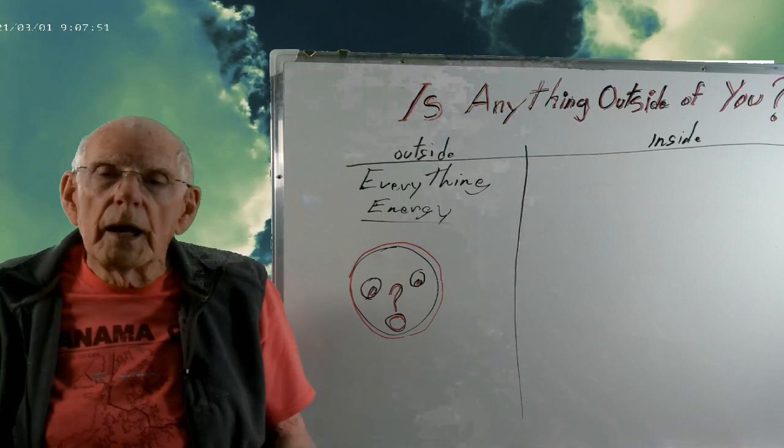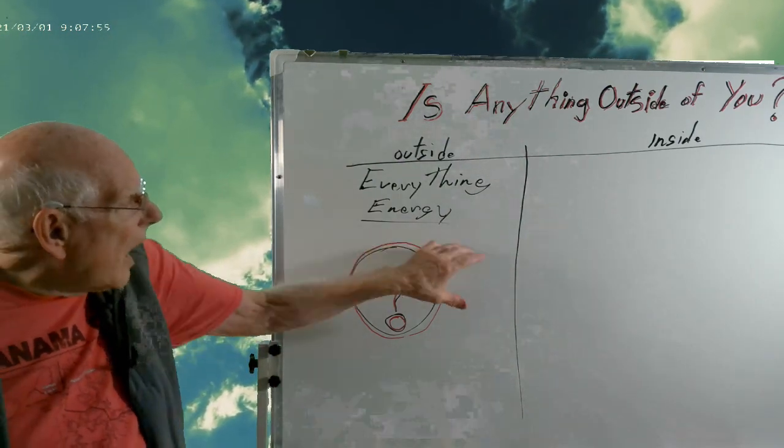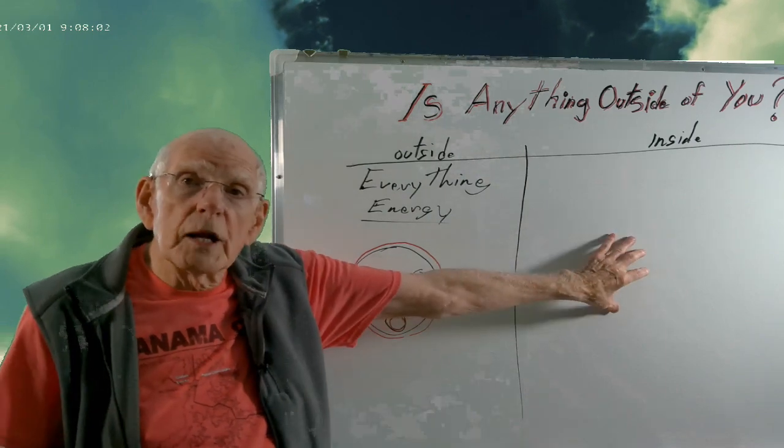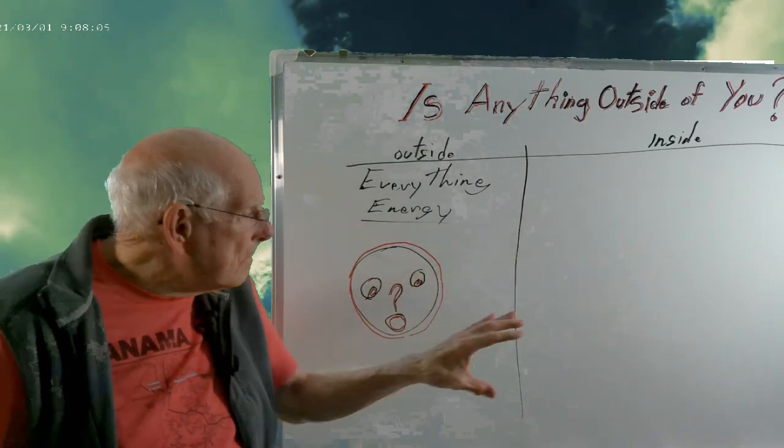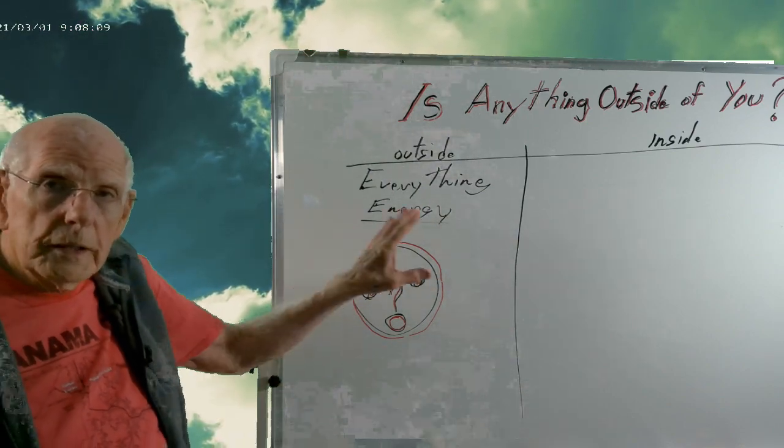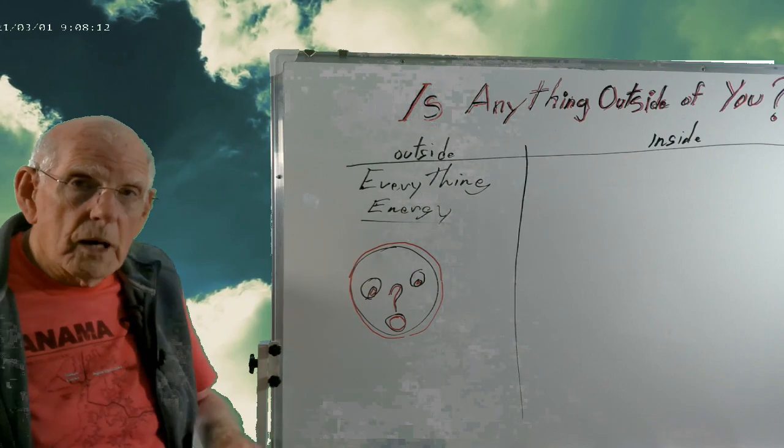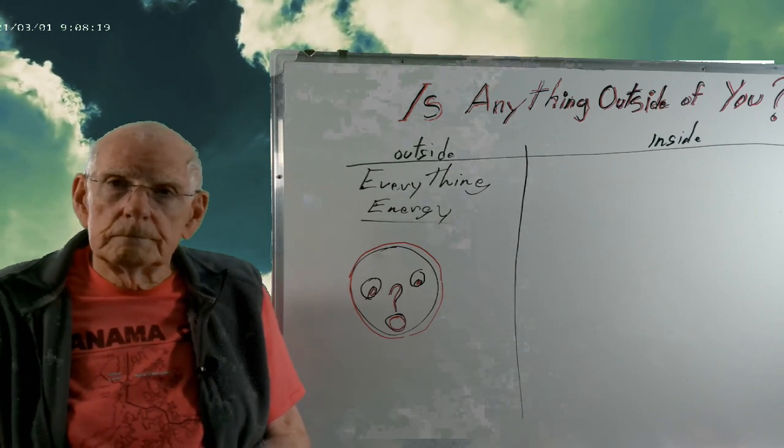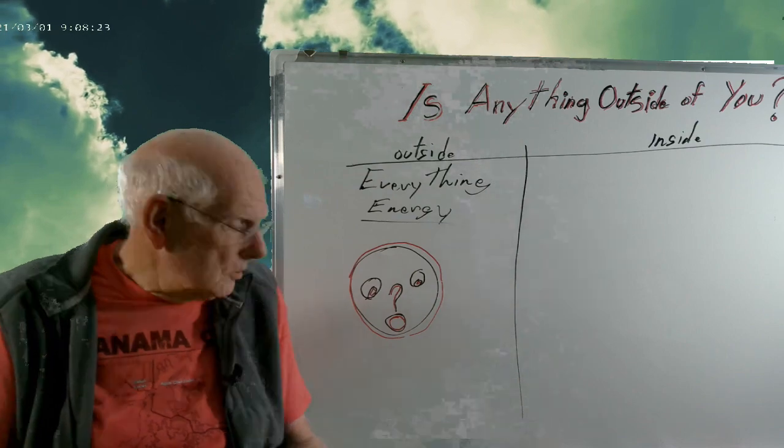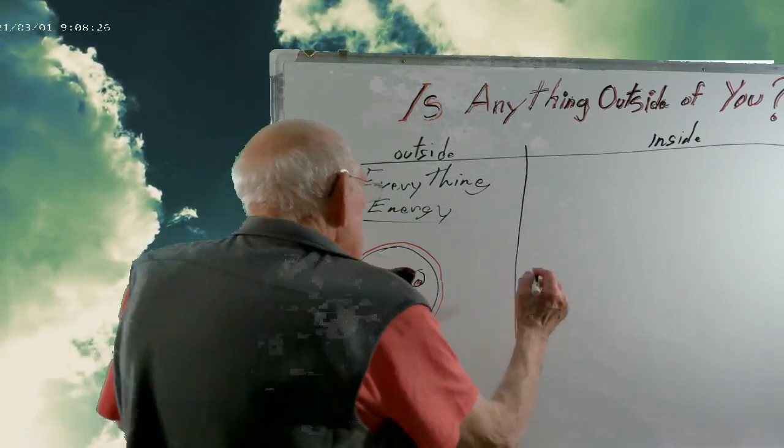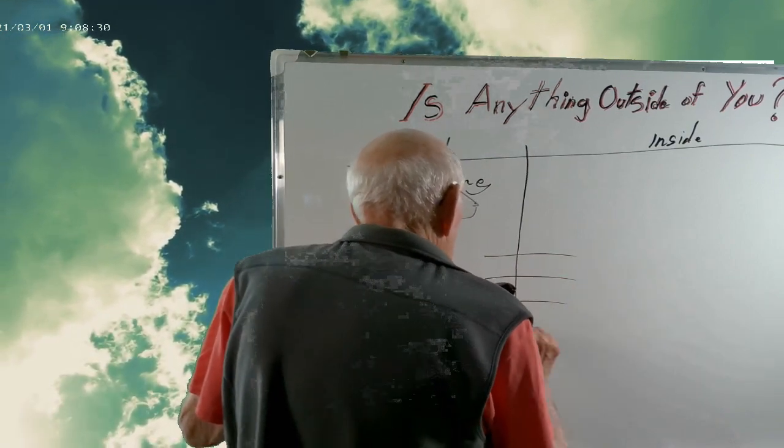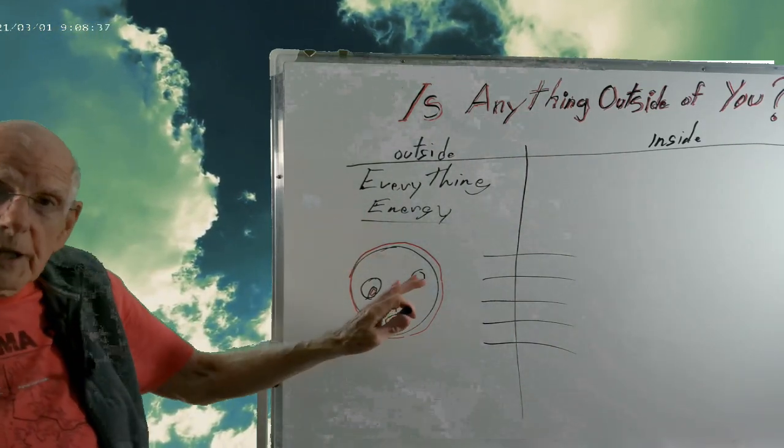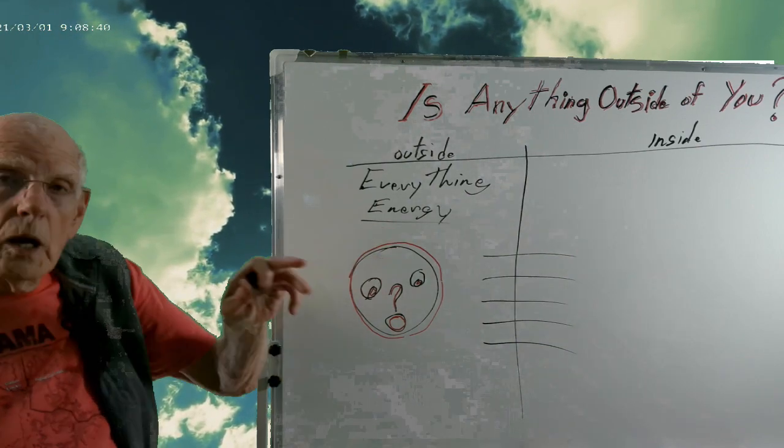So this unknown object here that I have drawn, if you want to get the information inside, information about this object, this question mark, you have to use your senses. So how many you got? We'll use the basic five. So you have five senses: one, two, three, four, five, that you investigate this unknown outside object.